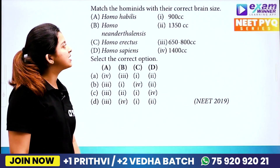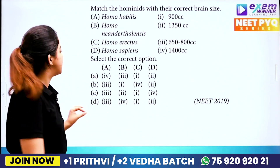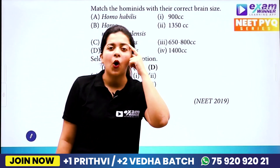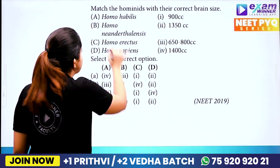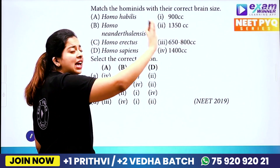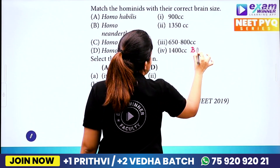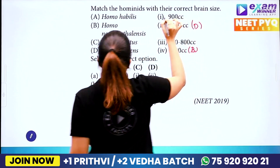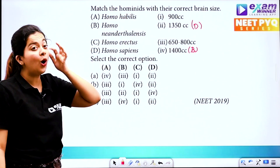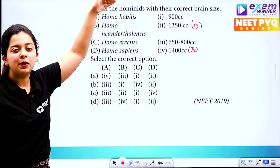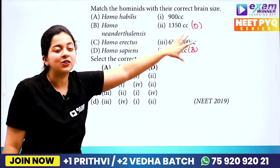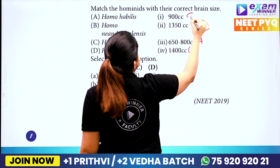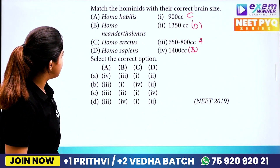Now let's match the hominids with their correct brain size. We have Homo habilis, Homo neanderthalensis, Homo erectus, and Homo sapiens. Homo neanderthalensis has a brain size of 1400cc — that is option B. Homo habilis has a brain size of 650 to 800cc. Homo erectus has a brain size of 900cc — that is option C. So matching A gives us option D as the answer.